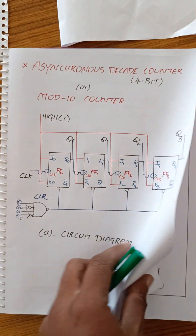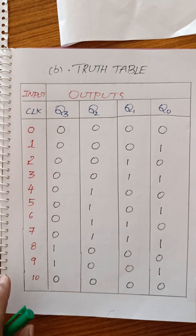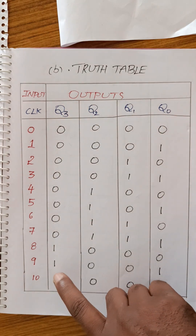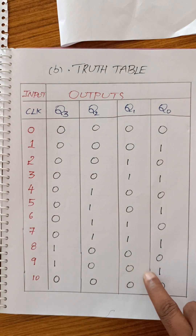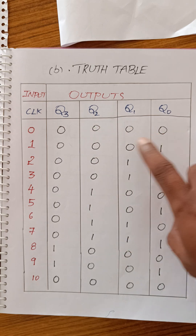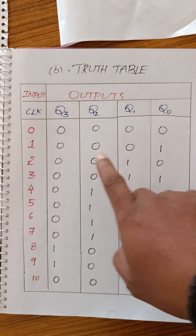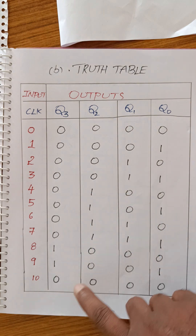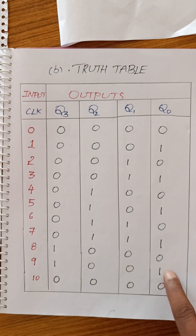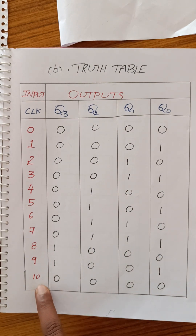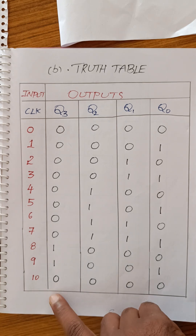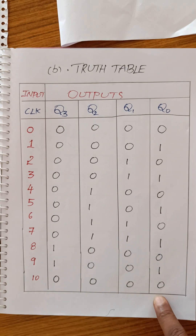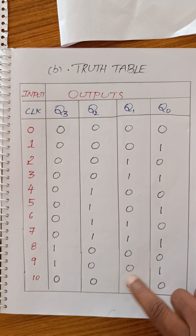In the truth table, the counter counts from 0 to 9. Each decimal value 0, 1, 2, 3 has its corresponding binary value. When the 10th pulse arrives, the count would normally be 10, whose binary equivalent is 1010. At that point, the circuit resets back to 0, giving a 0-to-9 count cycle.